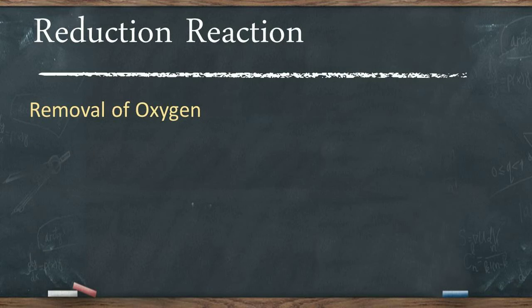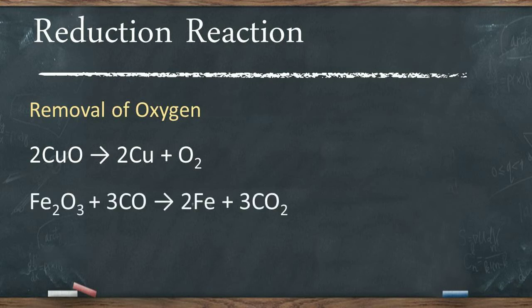As removal of oxygen from a substance is also called a reduction, the decomposition of cupric oxide to form copper and oxygen represents a reduction reaction, because oxygen is removed from cupric oxide — here, cupric oxide is said to be the reduced substance. Ferric oxide reacts with carbon monoxide to form iron and carbon dioxide; in this reaction, oxygen is removed from ferric oxide to form iron, so ferric oxide is said to be reduced.